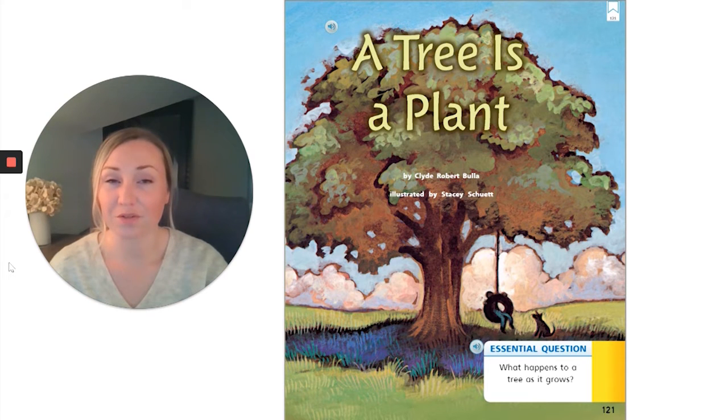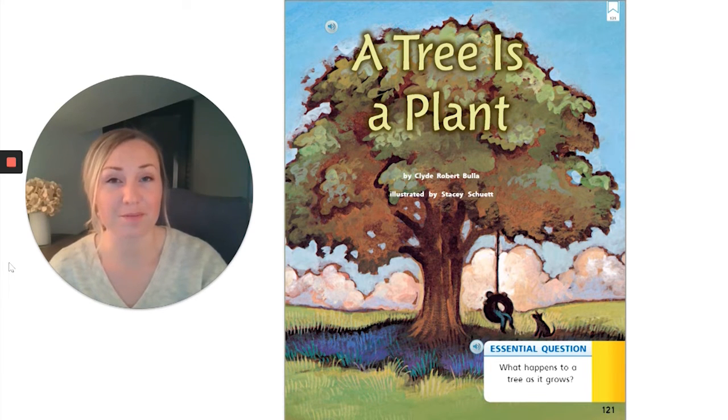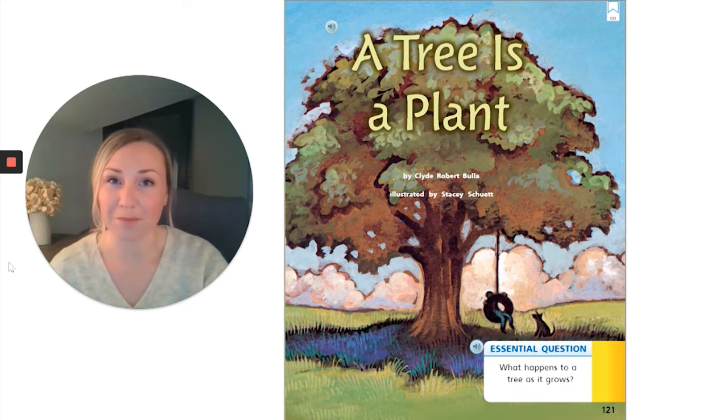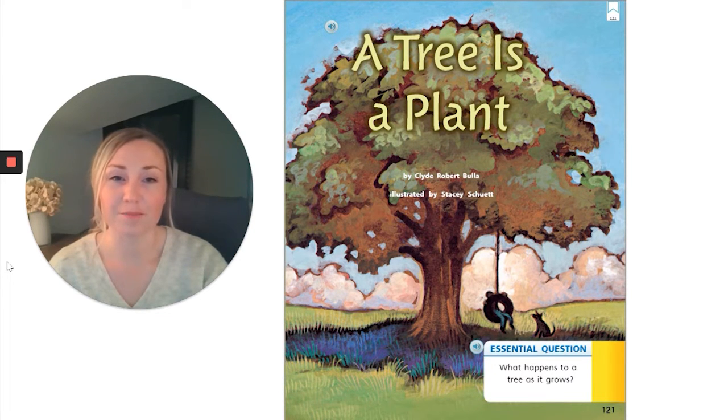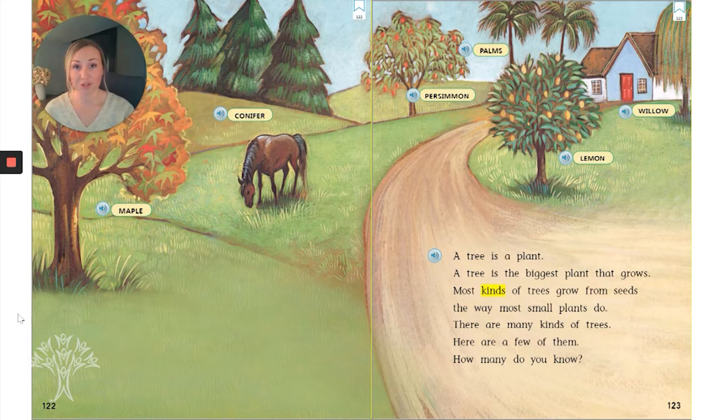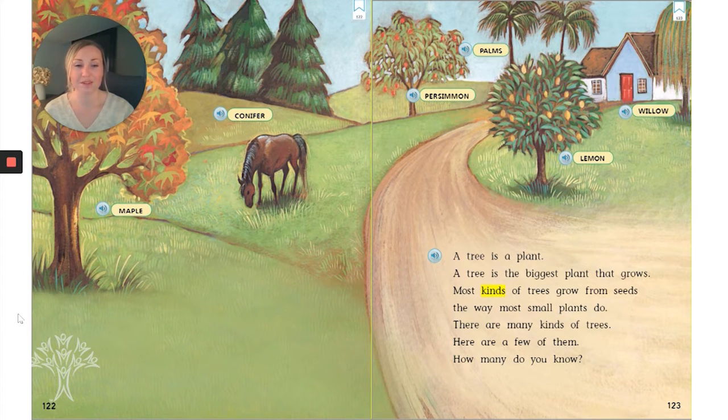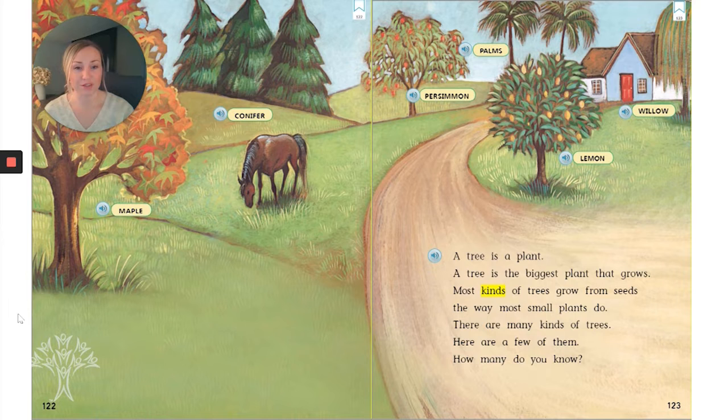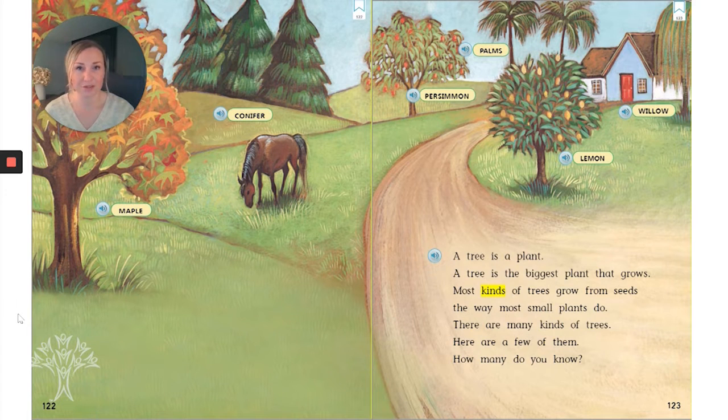Let's start reading. Remember to be listening for facts about apple trees. At the end, we're going to write some of them down and make a diagram of an apple tree using the facts that we've learned. A tree is a plant. A tree is the biggest plant that grows. Most kinds of trees grow from seeds the way most small plants do. There are many kinds of trees. Here are a few of them. How many do you know? Can you remember some of the ones that we talked about yesterday?